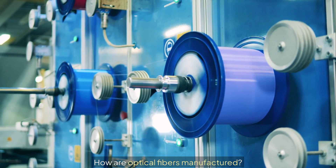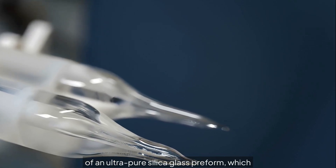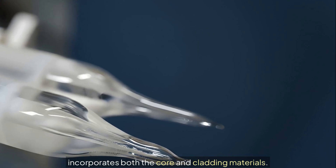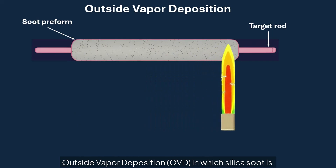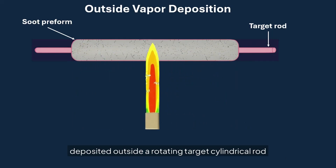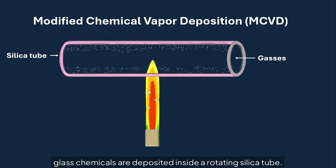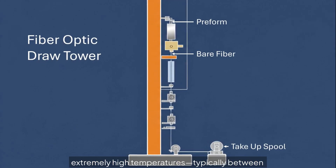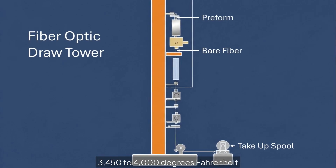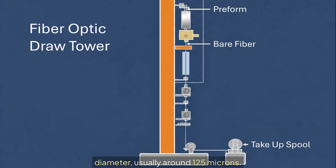The production of fiber optic strands starts with the creation of an ultra-pure silica glass preform, which incorporates both the core and cladding materials. This preform is made using one of two main techniques: outside vapor deposition (OVD), in which silica soot is deposited outside a rotating cylindrical rotor, or modified chemical vapor deposition (MCVD), in which glass chemicals are deposited inside a rotating silica tube. Once the preform is ready, it is heated in a drawing tower to extremely high temperatures, typically between 3,450 to 4,000 degrees Fahrenheit, and drawn into thin strands of optical fiber with a uniform diameter, usually around 125 microns.